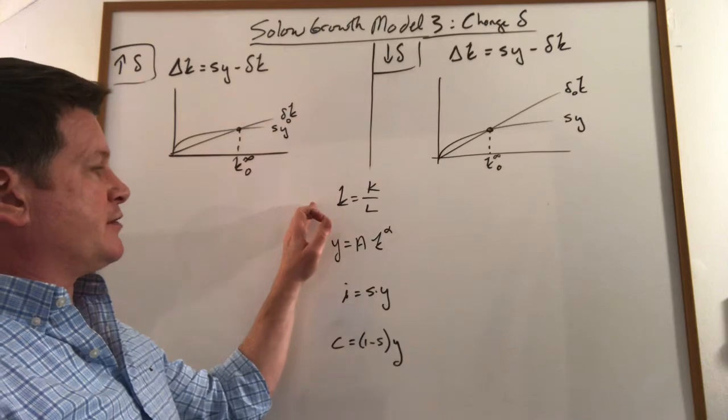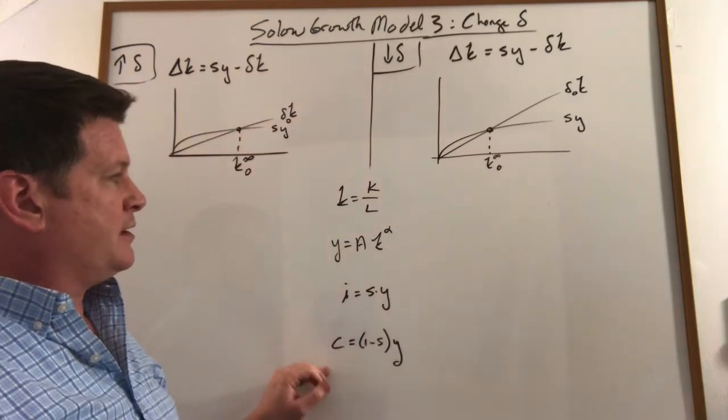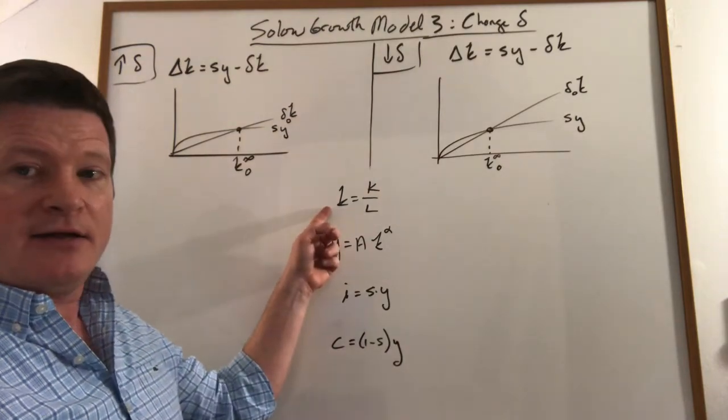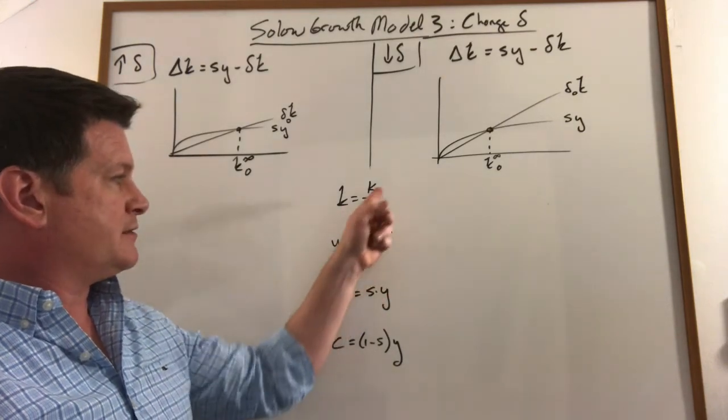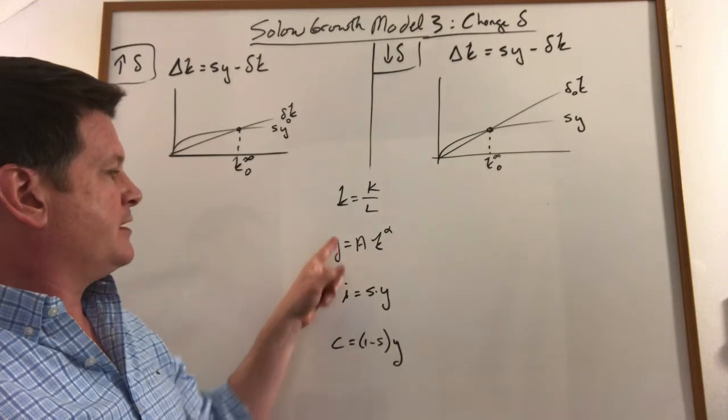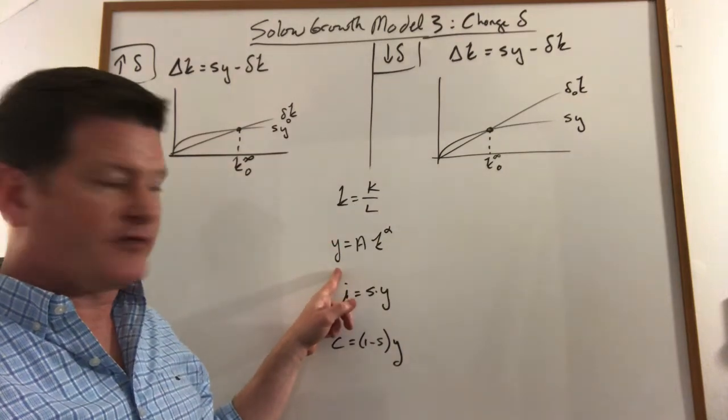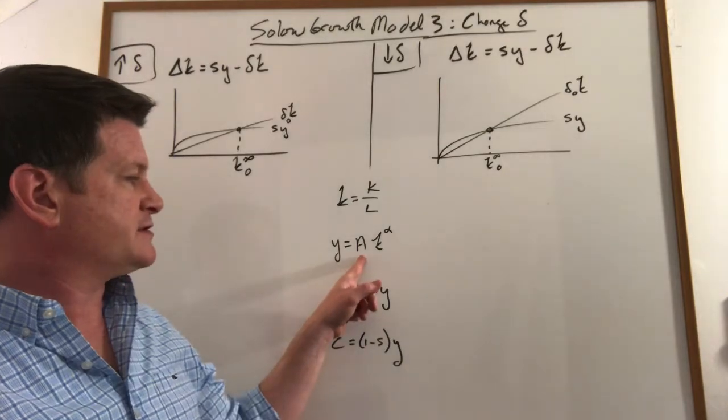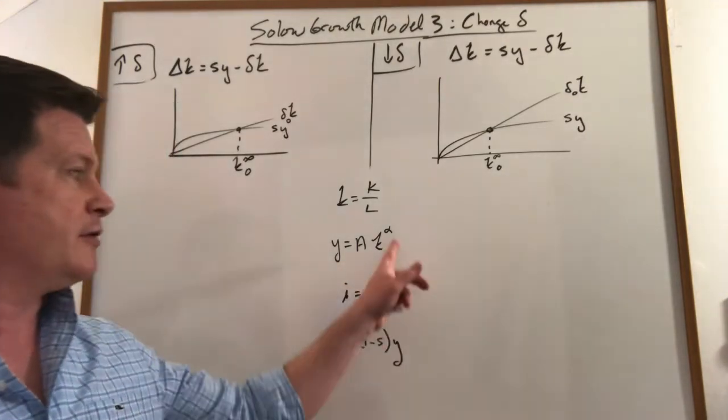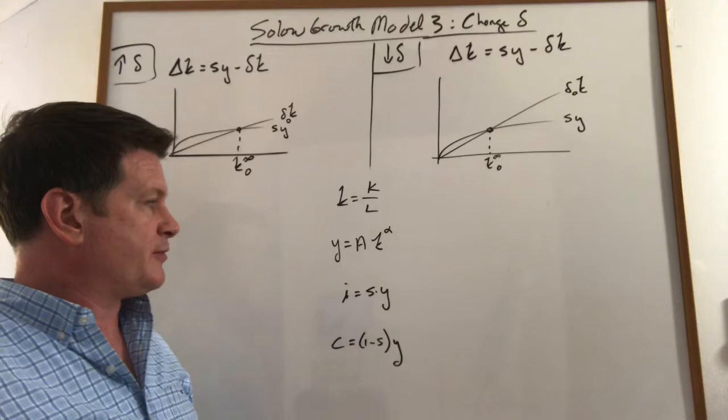These are the key equations of our model. Small k, lowercase k, is total capital stock divided by labor. This is capital per worker. GDP is going to come from a Cobb-Douglas production function where output per worker is technology times capital per worker to alpha, which is capital share in output.